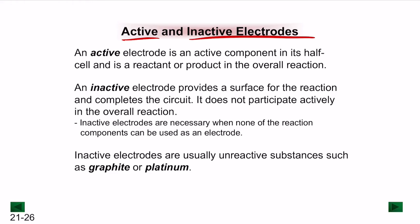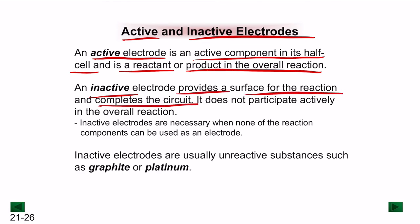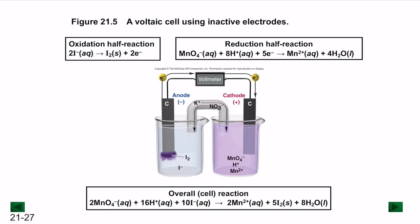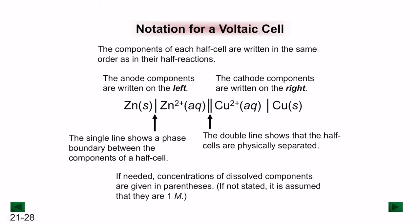An active electrode participates directly as a reactant or product in the overall reaction. An inactive electrode provides a surface for the reaction and completes the circuit but does not participate in the overall reaction. Inactive electrodes are necessary when none of the reaction components can serve as a solid electrode — the most common inactive electrodes are graphite and platinum.